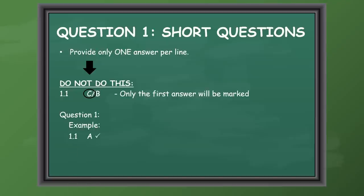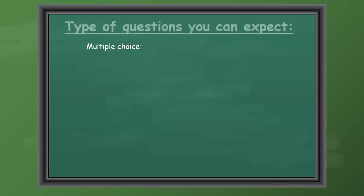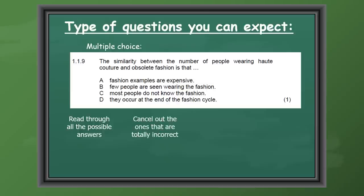Always do the questions below each other and do not leave lines open in between your answers. This will really help the markers. Now we're going to look at different types of questions that can be expected in Section A. First we're going to look at multiple choice. It's very important that you start off by reading through all the possible answers, then cancel out the ones that are totally incorrect, then read the remaining answers again and decide which one is most correct.